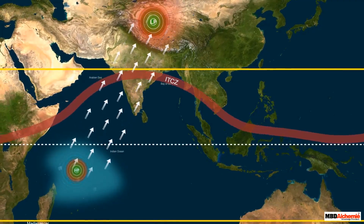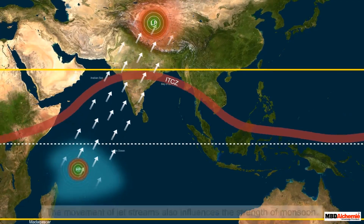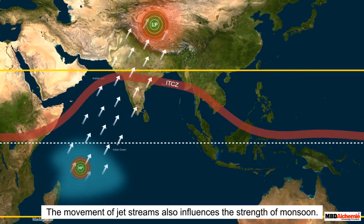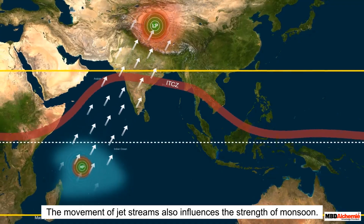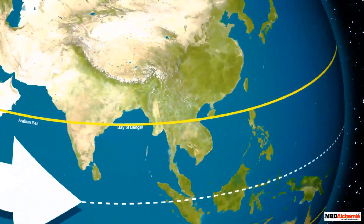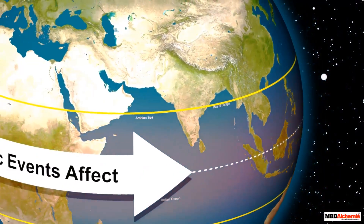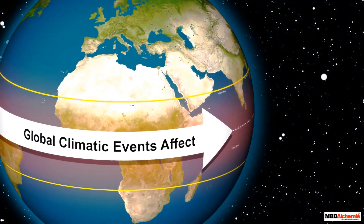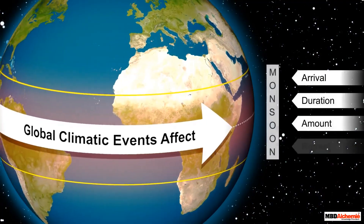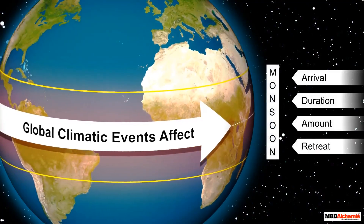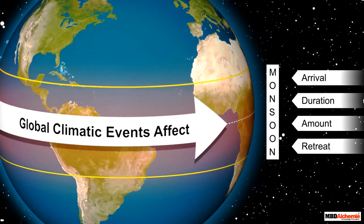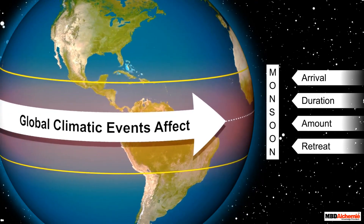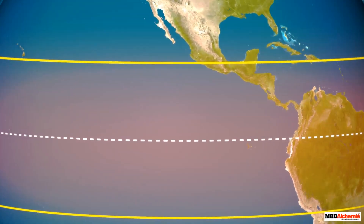Around the same time, the movement of upper air circulation, or the jet streams, also affects the summer and winter monsoons of India. Global climatic events of changing pressure systems over oceans have a tremendous effect on the arrival, duration, amount, and retreat of monsoon in India. The equatorial belt or tropical region of the Pacific and Indian Oceans faces the maximum effects.